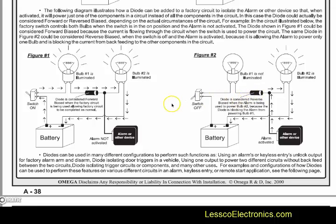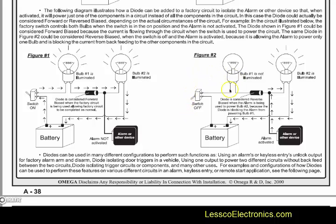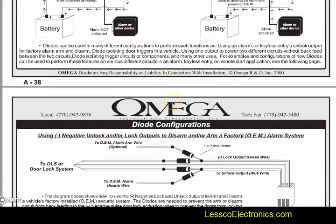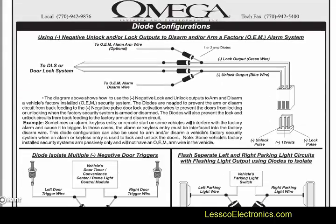A simple example I like to use: if you have a hood open and a trunk open and no diodes, and both are connected to an alarm, opening the hood could turn on the trunk light — that's not good. You should have two diodes with the banded sides connected to either one so they both go to the alarm but don't feed back to one another. That's why diodes are so important.